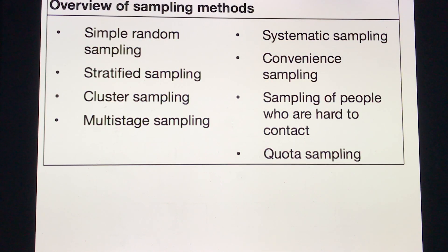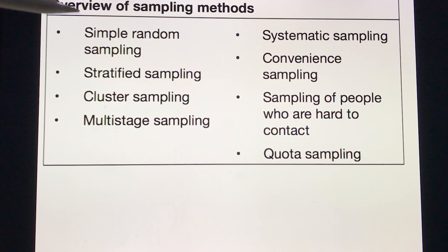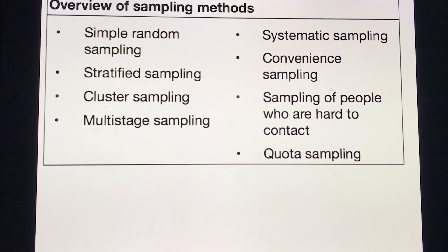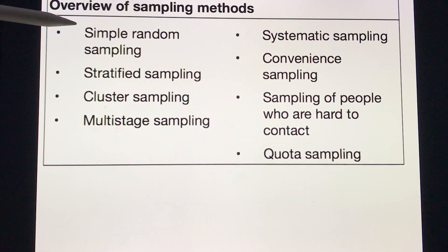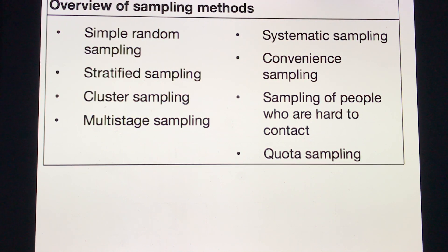Here is an illustration from the University of Liverpool showing an overview of sampling methods: simple random sampling, stratified, cluster, multi-stage sampling, systematic sampling, convenient sampling, quota sampling, and sampling of hard-to-contact people. Pay attention to the first two: simple random sampling and stratified sampling.